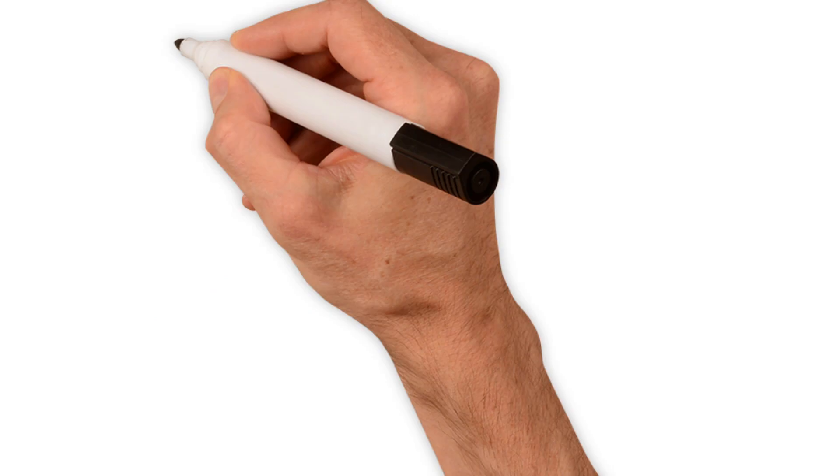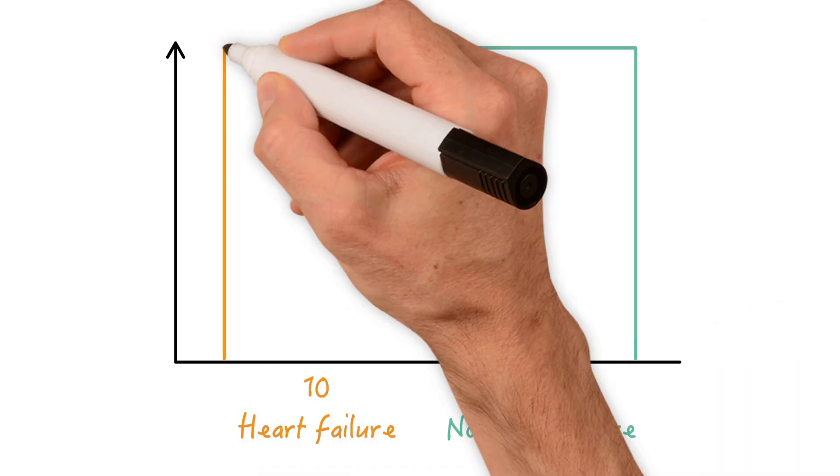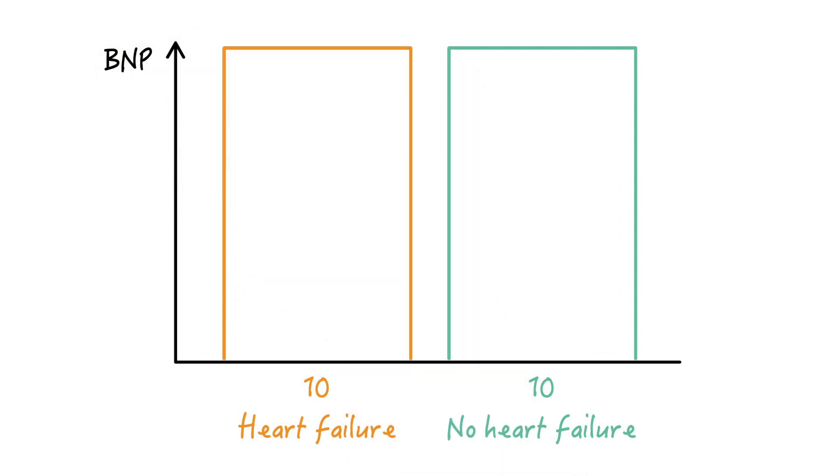Let's pick another example relating to heart failure. Let's say we have a group of 10 patients with heart failure and a group of 10 healthy controls without heart failure. This is the concentration of BNP or brain natriuretic peptide, a marker of heart failure.